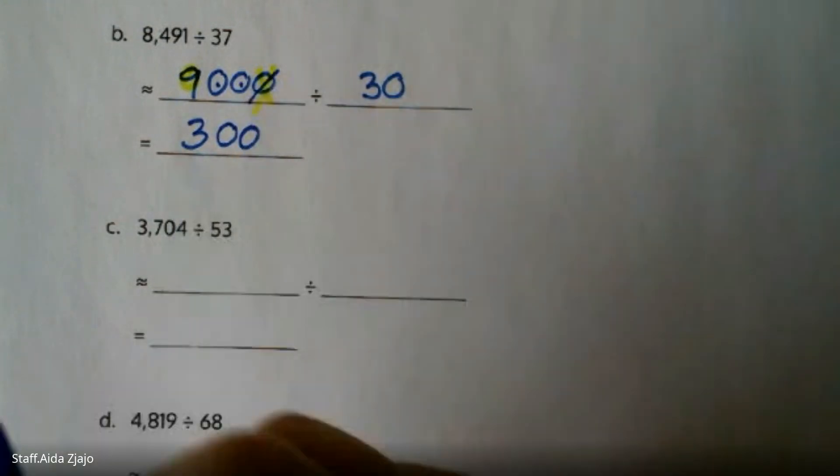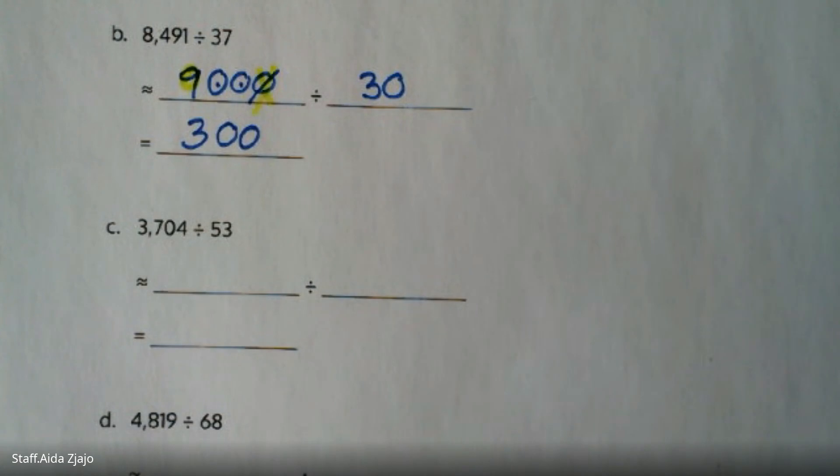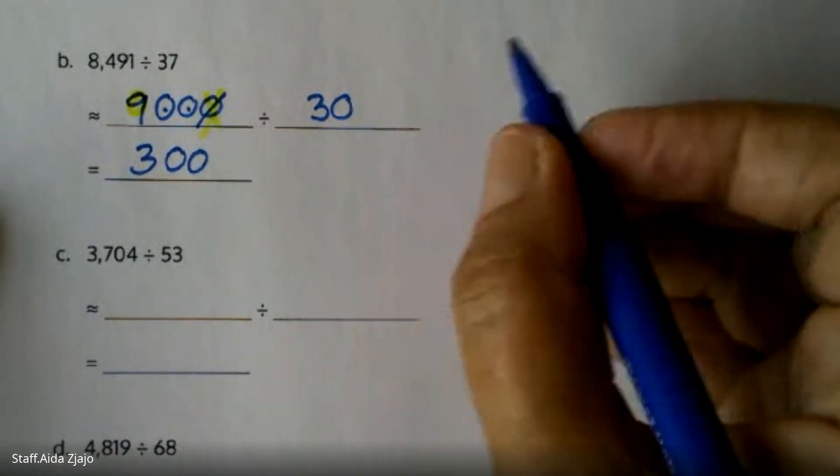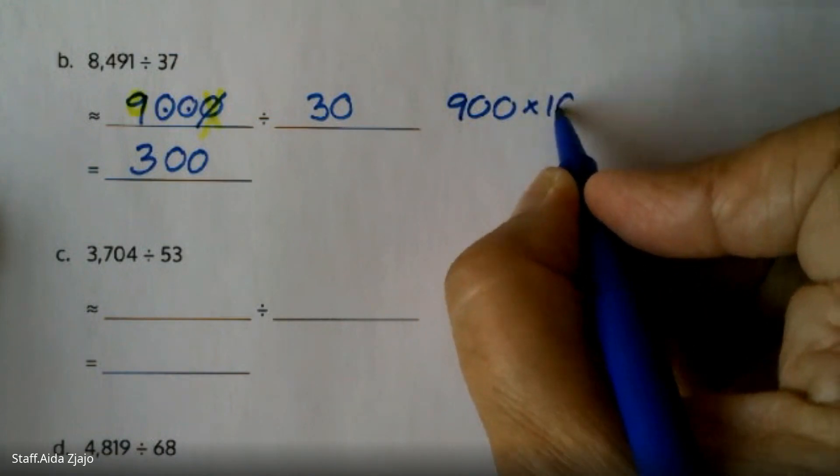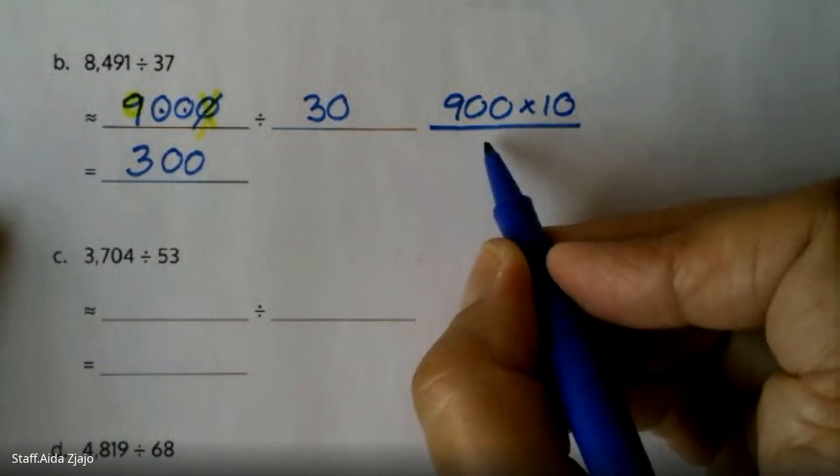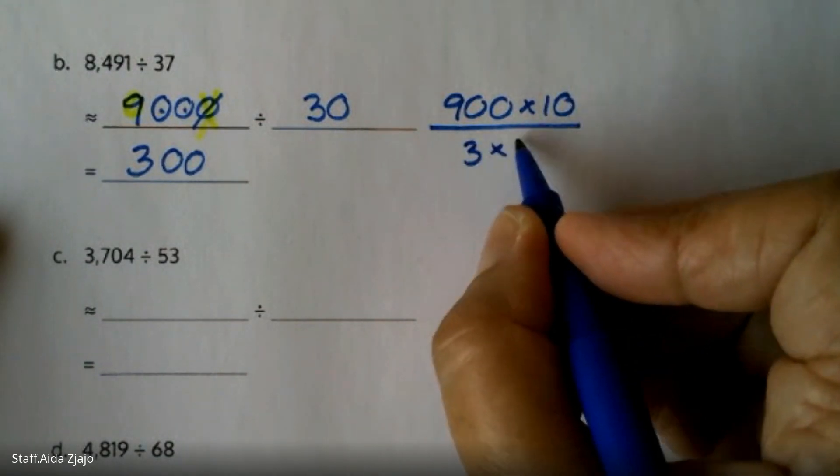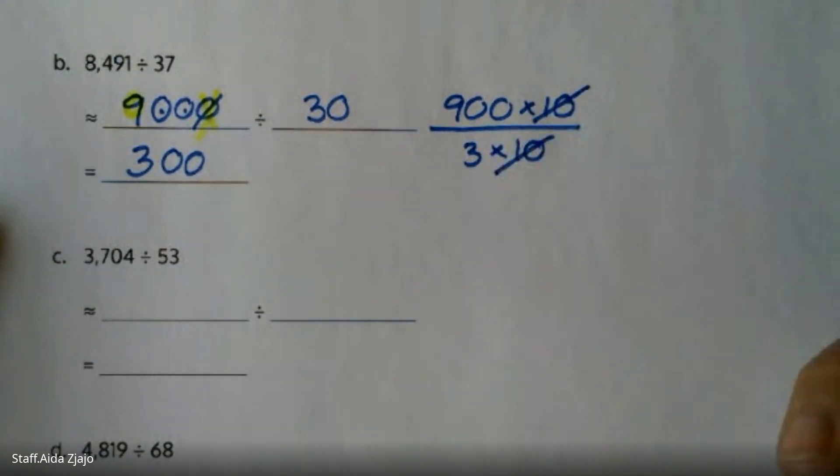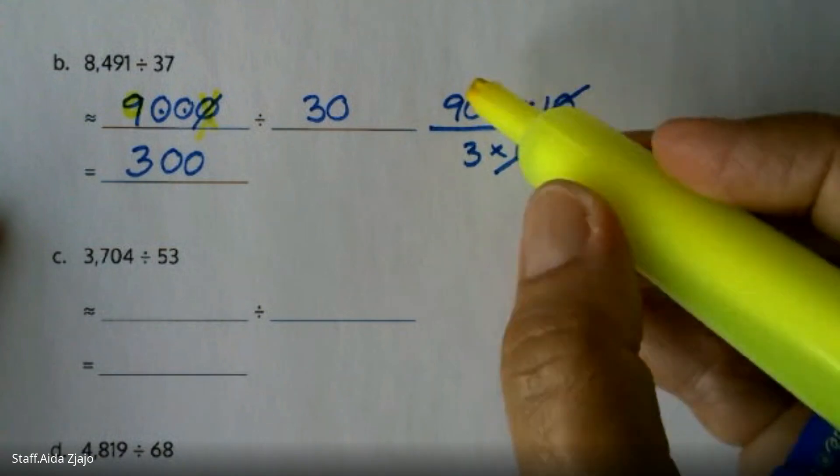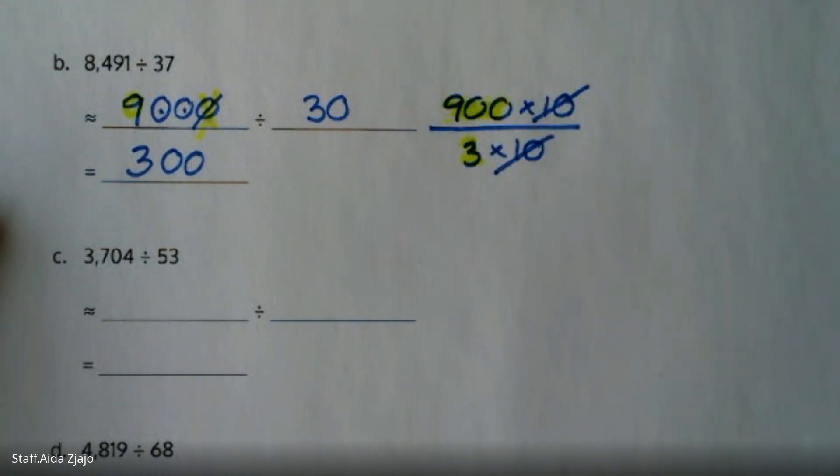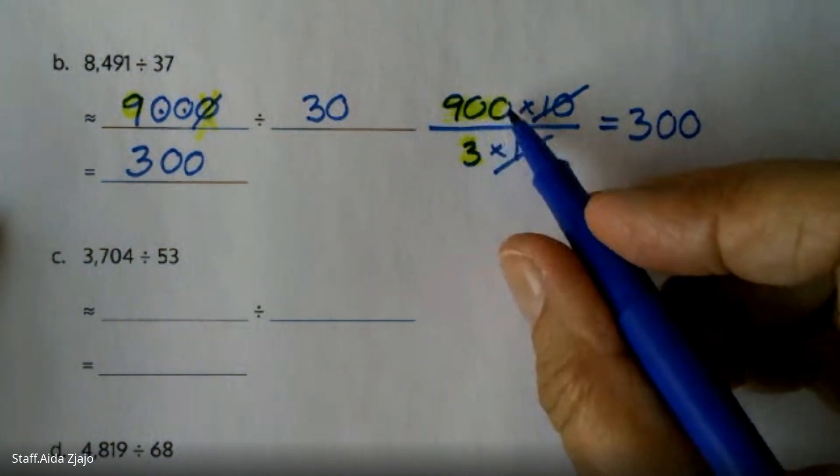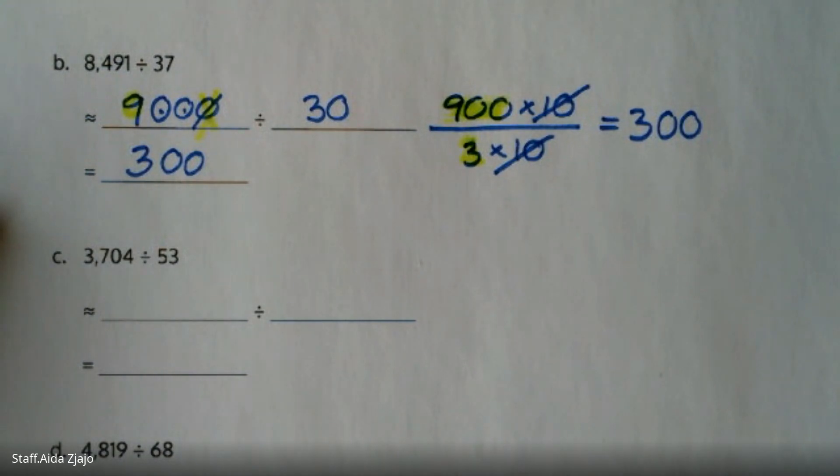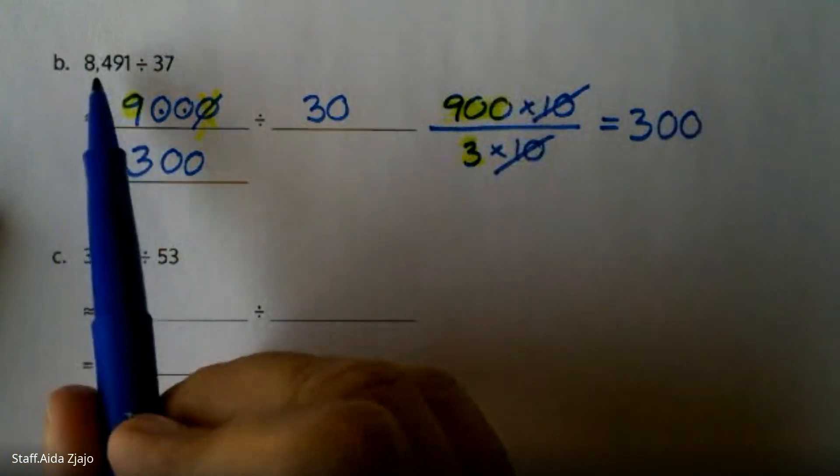All you need to do is 9 divided by 3 is 3 and add these two zeros that are left. So let's do what I did: 900 times 10 is 9,000, and then 3 times 10 is 30. So 10 and 10, they divide, they cancel each other. So you have here 900 divided into 3. 9 divided by 3 equals 3, and then that is actually 300.